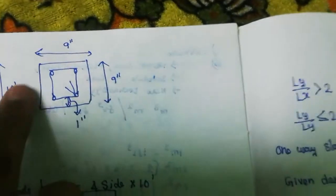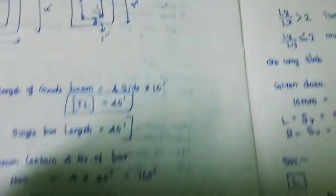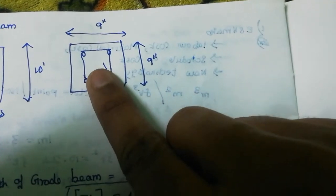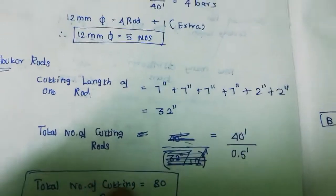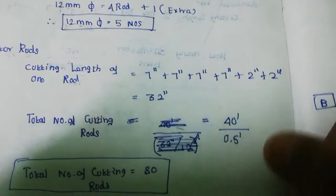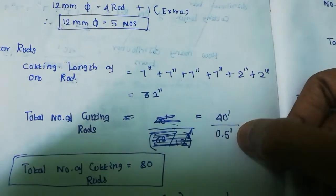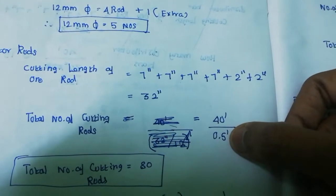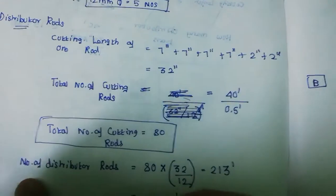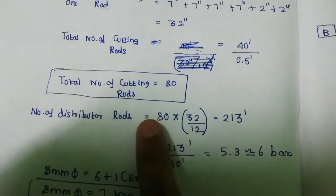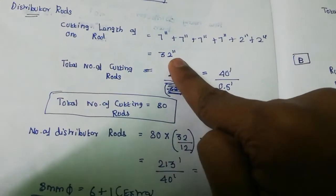Distributor rod: spacing is 7 inch, then 2 inch, 2 inch, 2 inch, 2 inch, 2 inch, 2 inch — totaling 32 inches. The total number of cutting rods is 80 rods. Then 32 divided by 12 equals 32 inches.